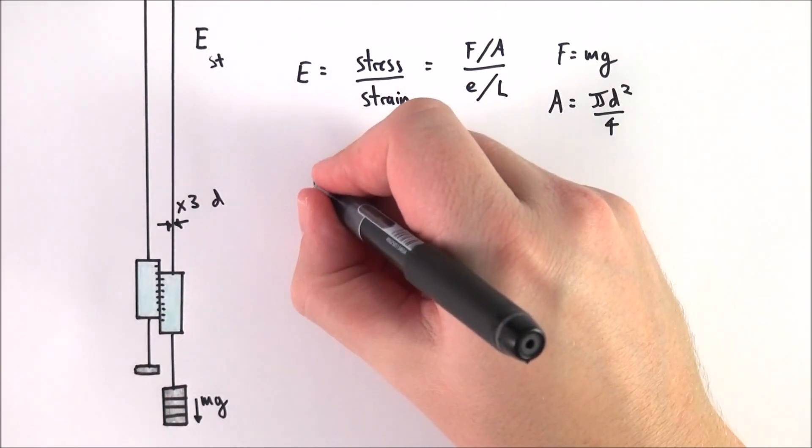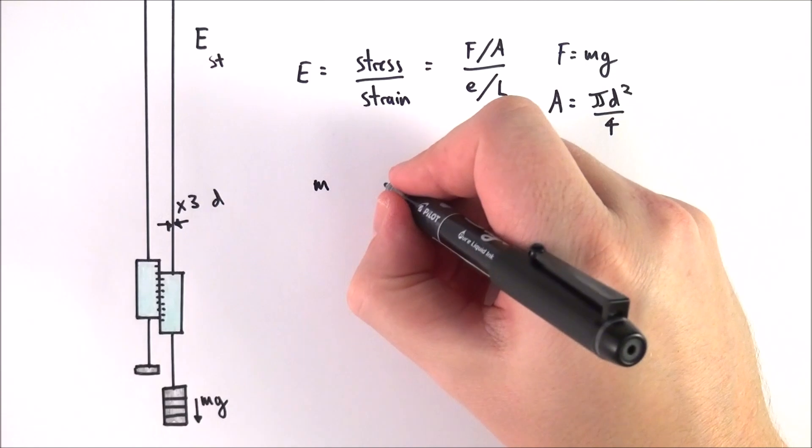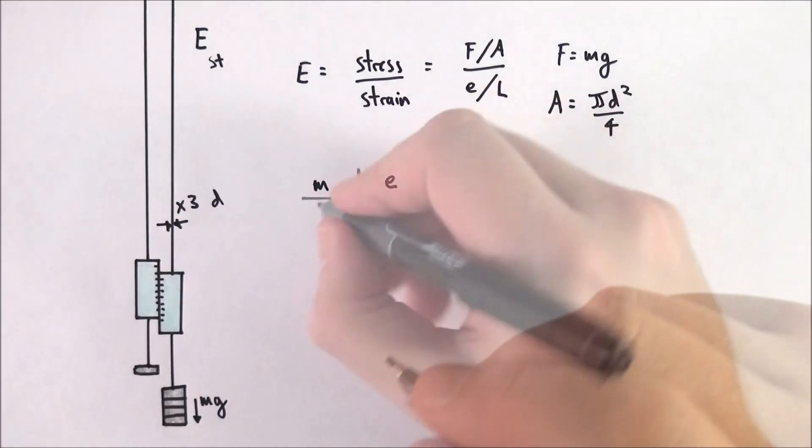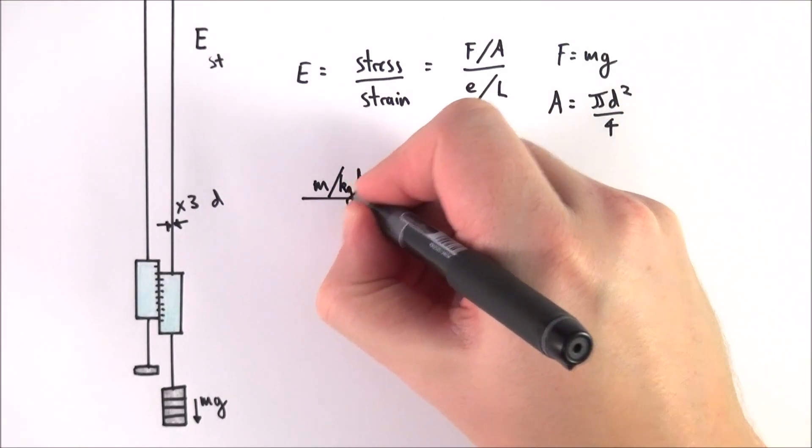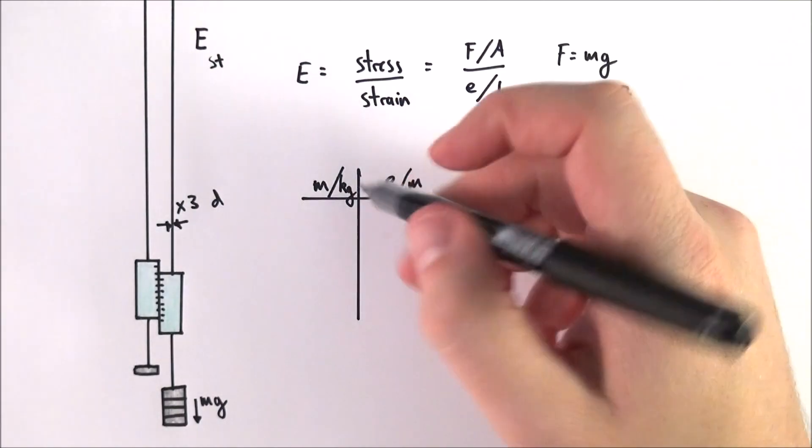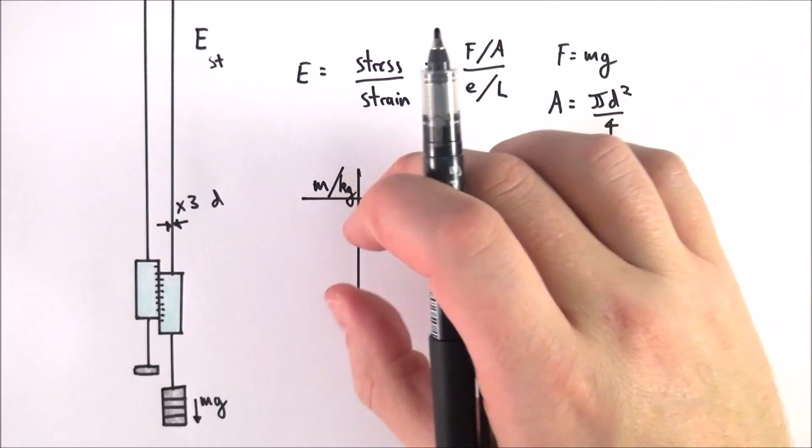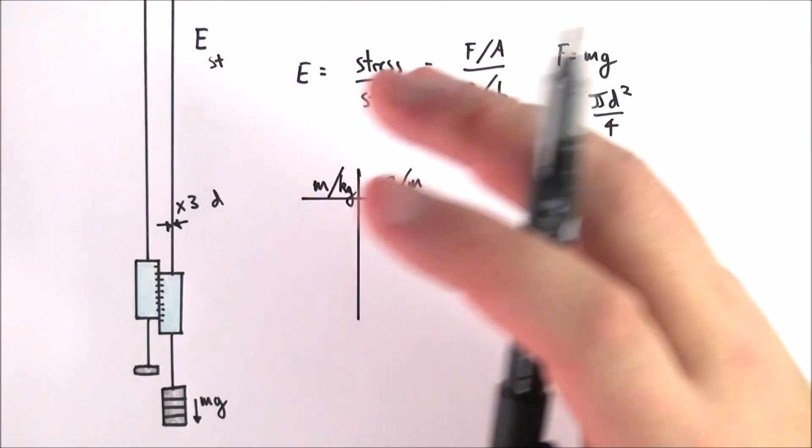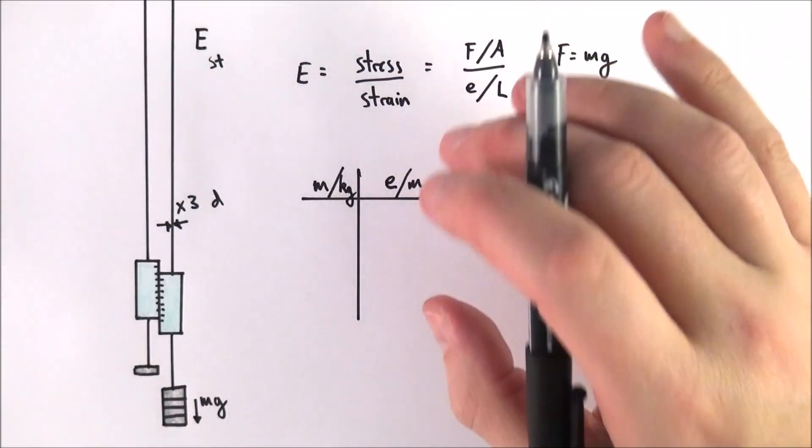So what you can do then is vary the mass and measure the extension. We measure mass in kilograms and our extension in meters, so always convert it into meters. You can do this for several different masses, obviously taking repeat readings as you normally would.